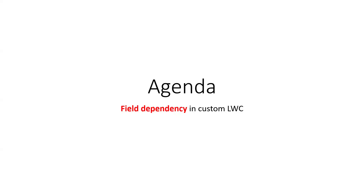Today's agenda is creating field dependency between two fields in a custom Lightning Web Component. Those fields would be dependent on each other. We create a standard field dependency the same way, but when using a custom component, that dependency does not get respected by default. So let's see how to do that.